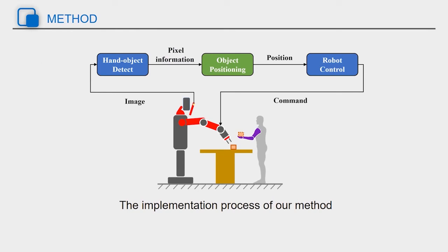Here's the implementation process of our method. First, the robot obtains RGB images through the head camera. It then sends the images to a lightweight hand-object detector to obtain pixel information of the hand and the contact object. Then, it obtains the three-dimensional position of the object, through the object positioning module, and finally drives the robot arm to complete the task. The focus is on the object positioning module.